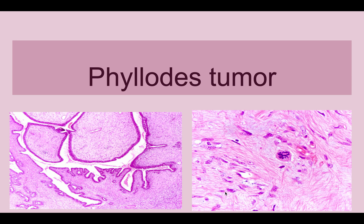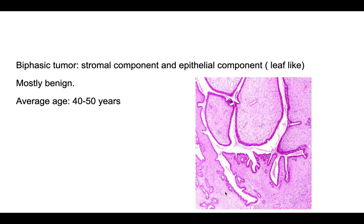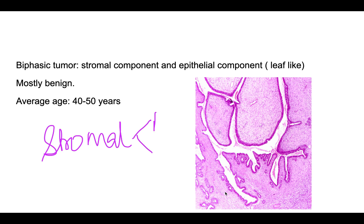In this video we'll discuss phyllodes tumor of the breast. In the breast we have stromal tumors, and the two main important stromal tumors are fibroadenoma and phyllodes tumor. In an earlier video we discussed fibroadenoma; here we will discuss phyllodes tumor.